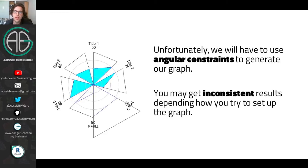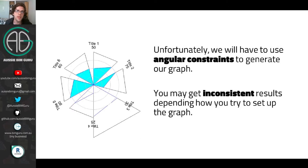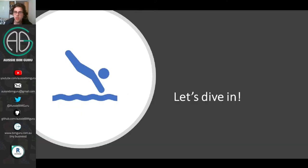I am going to be using an angular constraint system to achieve some of these controls and sometimes these can give pretty inconsistent results. I might even run into some errors along the way but I am going to show you the most stable method I've found for building the constraints. I'm going to be building it to a fixed number of elements around the wheel — six components to measure in this case. So let's dive in.